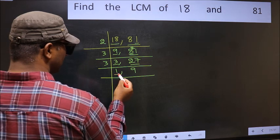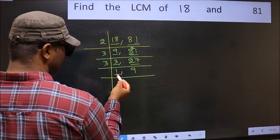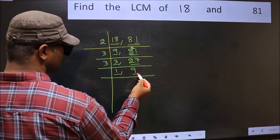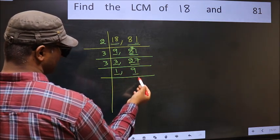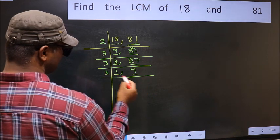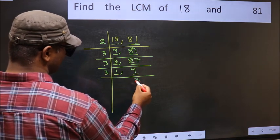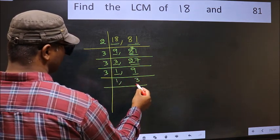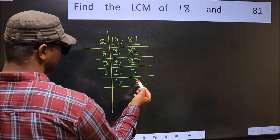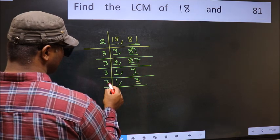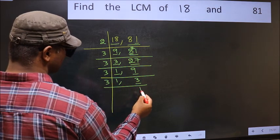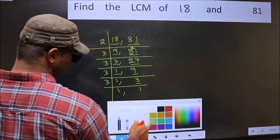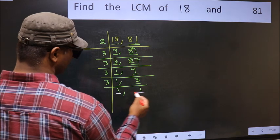Now we got 1 here, so focus on the next number: 9. 9 is 3 times 3. Now here we have 3, and 3 is a prime number, so 3 times 1 is 3. We got 1 in both places.